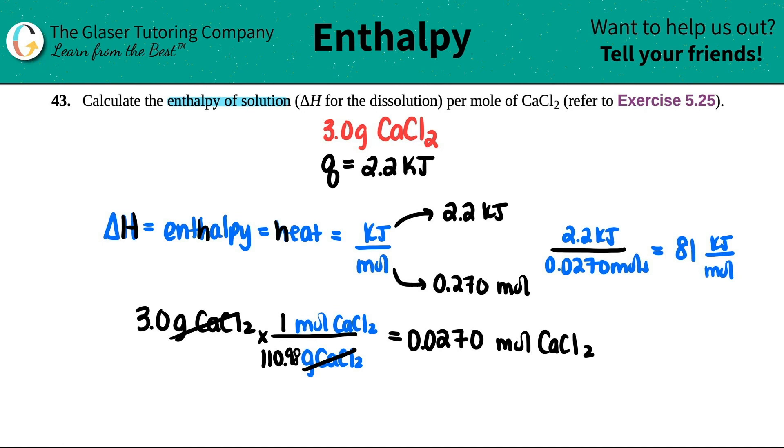And that is the final answer. So for every one mole of the calcium chloride that you have, you will be able to absorb 81 joules or 81 kilojoules of heat for the solution.